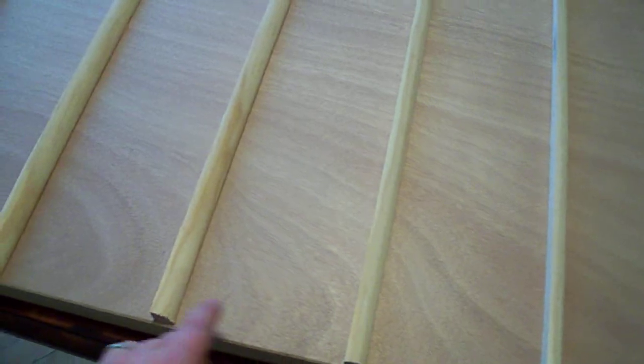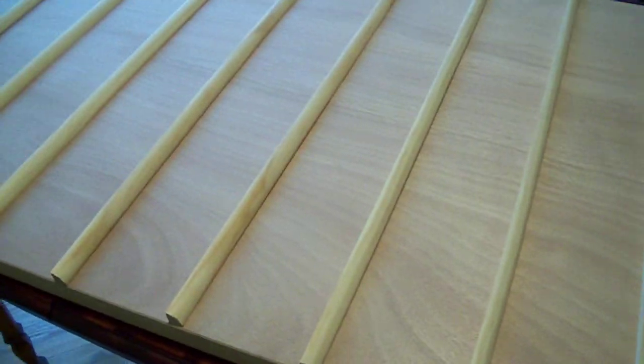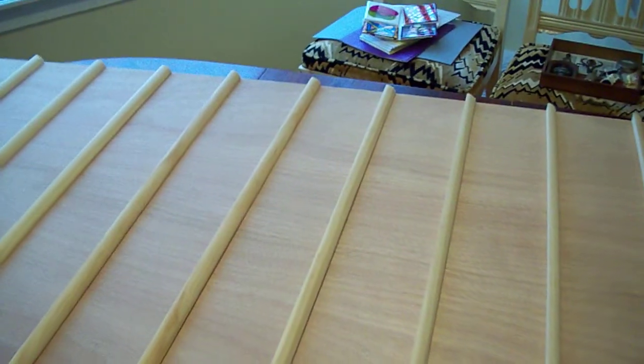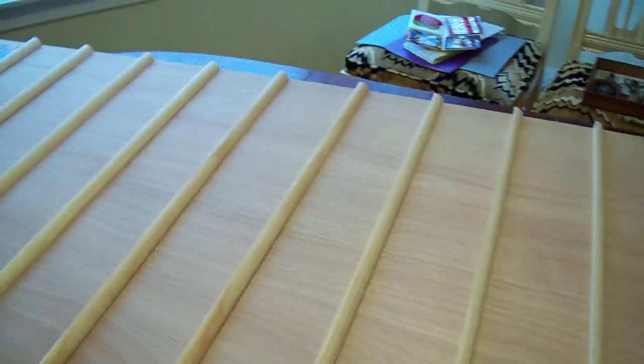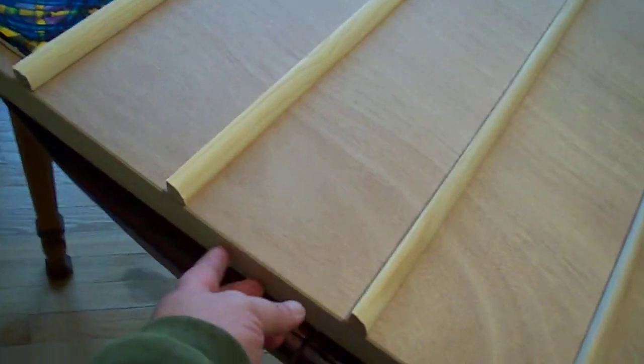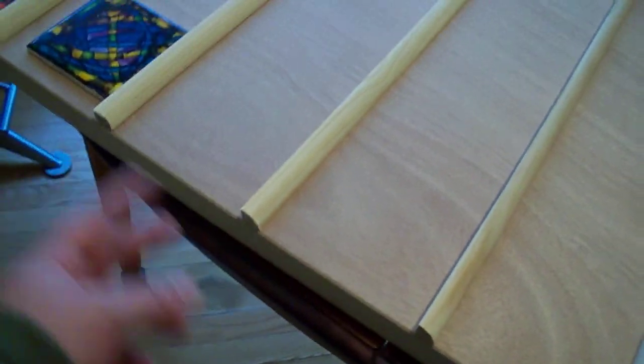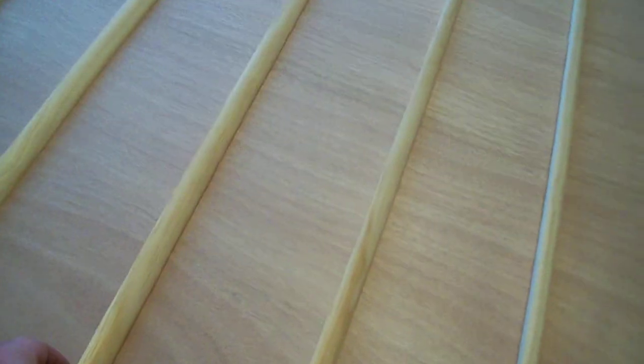Just oak veneer hollow core interior door. Doesn't even have a hole for a doorknob or routing cut into the edges for the hinges or anything. It's just a perfect rectangle all the way around. And this is shoe molding like for your baseboards.